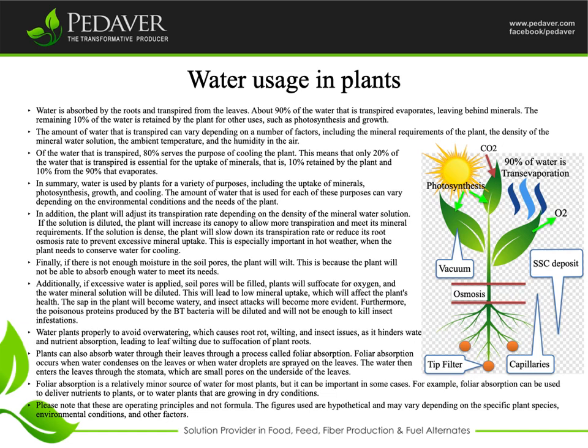Furthermore, the poisonous proteins produced by the Bt bacteria will be diluted and will not be enough to kill insect infestations. Water plants properly to avoid overwatering, which causes root rot, wilting, and insect issues, as it hinders water and nutrient absorption, leading to leaf wilting due to suffocation of plant roots.